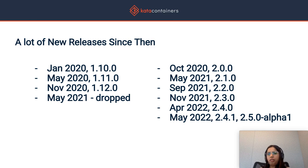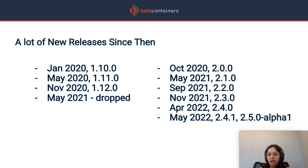A lot of new releases have been made since then. We made a second major release in October of 2020 where we introduced quite a few breaking changes. While we were working on 2.x, we continued to support 1.x for a while in order to support users that were using Kata 1.x in production. In May 2021, we made the decision to drop Kata 1.x and instead focused all our energies and efforts on the 2.x releases.